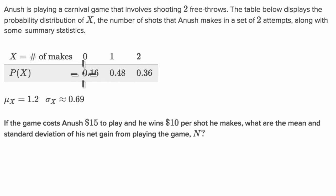And the probability that he makes zero is here, one is here, two is here. And then they also give us the mean of X and the standard deviation of X.